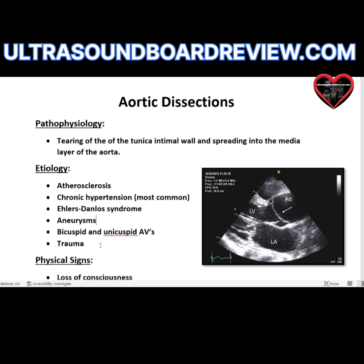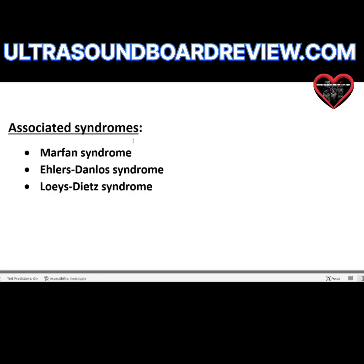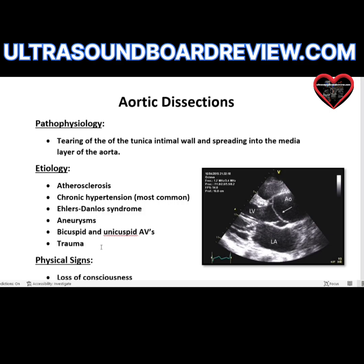Marfan syndrome is another etiology. If you have answer options asking which condition is associated with aortic dissections and you see Marfan's, choose that one. With Marfan's we know it causes mitral valve prolapse and aortic aneurysms.